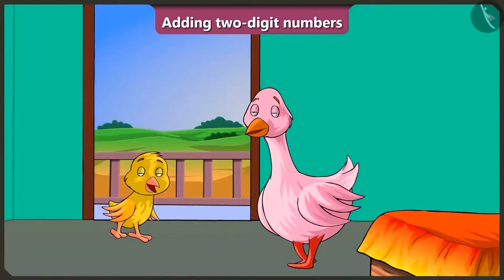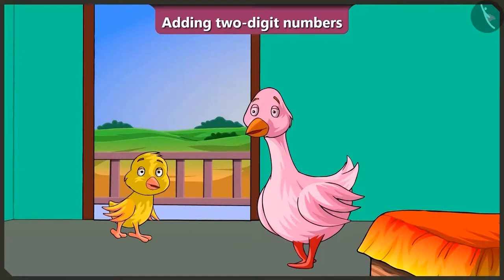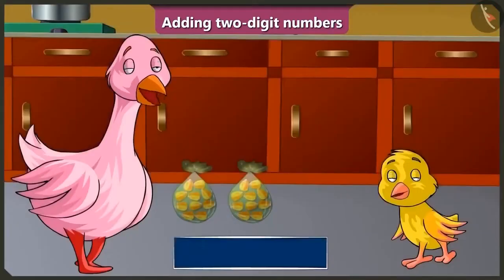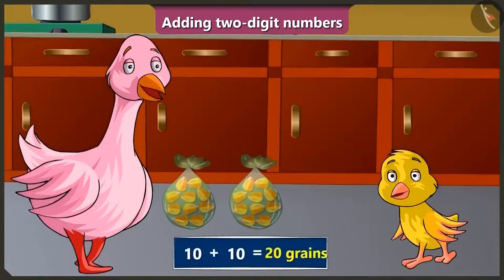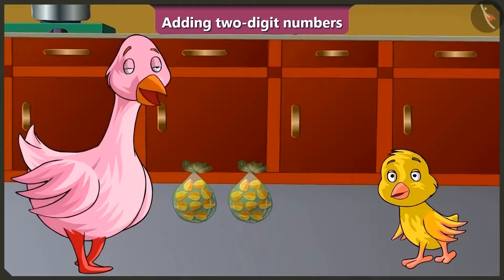Pinky Aunty, I have come. Hey, come in, Pilu. Your mother Minky had told me that you would be coming during the vacation. How is Minky? Aunty, Mummy is absolutely fine. Pilu, would you like to have some popcorns? Yes, Aunty, I love popcorns. Come on, let me make some popcorns for you. Oho, but here we have only 10 and 10 — 20 corn kernels. Pilu, will you bring another 10 kernels from the store room? Yes, Aunty, I will get them.